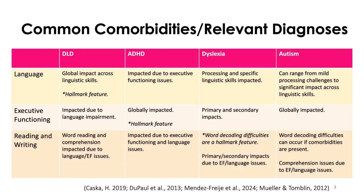With ADHD, the hallmark characteristic is that it is an executive functioning delay — that's the primary thing to address. Language can be impacted as well, so you may do some language intervention. But if you put someone with DLD side by side with someone who just has ADHD, the language-specific skills aren't going to be impacted as much with ADHD alone, though they can still be impacted. DLD tends to have a more significant impact on language-specific things than ADHD.